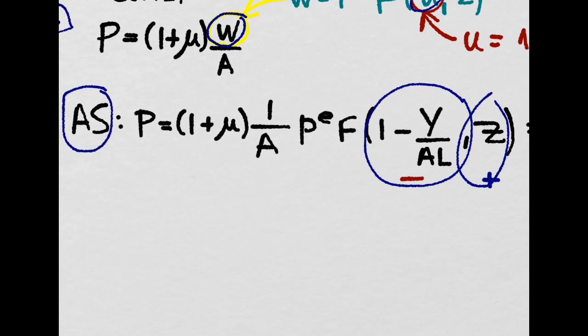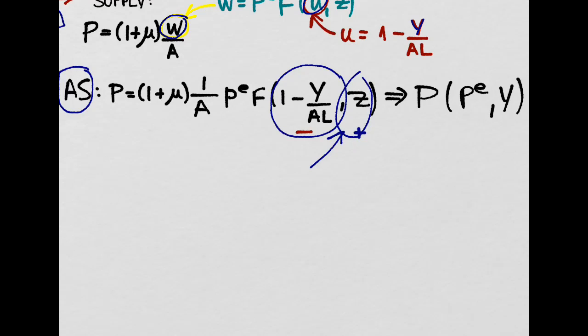Remember Z is a catch-all variable which can include things like the minimum wage or unemployment benefits and employment insurance and so on. So the basic idea is that the two variables here are the expected price level and basically output.